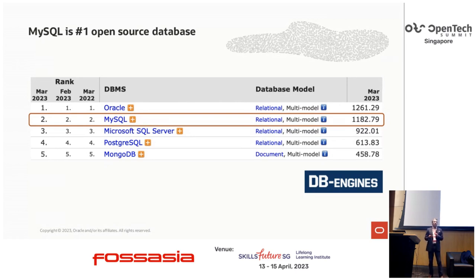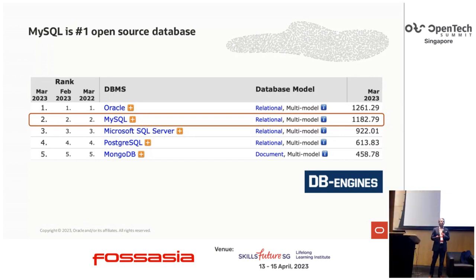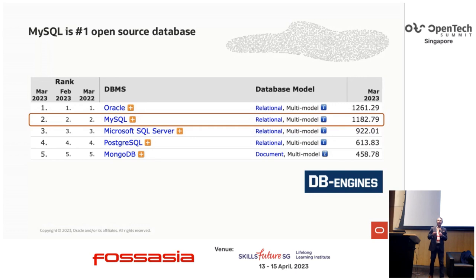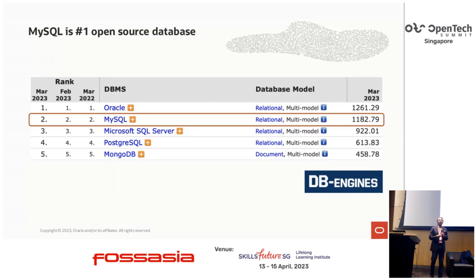there's a company called DatabaseEngines.com which monitors about 350 databases across the world and ranks them in order of their popularity. They use different parameters — they look at job boards, technical discussions — and create a list of database popularity. MySQL has been the most popular open source database on that list for at least the last five years.